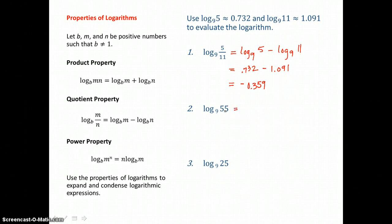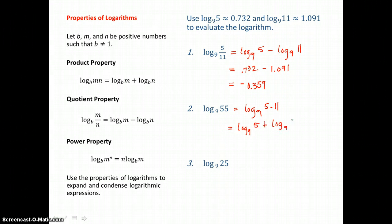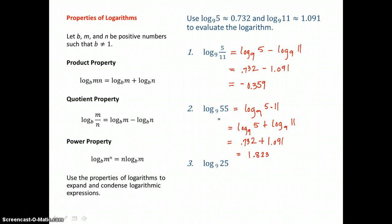In the next one, we want to write 55 in terms of 5 and 11 so that we can use the product property, quotient property, or power property. We can write 55 as 5 times 11, that product. So now we can use our product property and expand, writing that log of a product as the sum of two logs: log base 9 of 5 plus log base 9 of 11. Substituting in our values, log base 9 of 5 is 0.732 and log base 9 of 11 is 1.091. When I add, I get 1.823 — the power you raise 9 to to get 55.